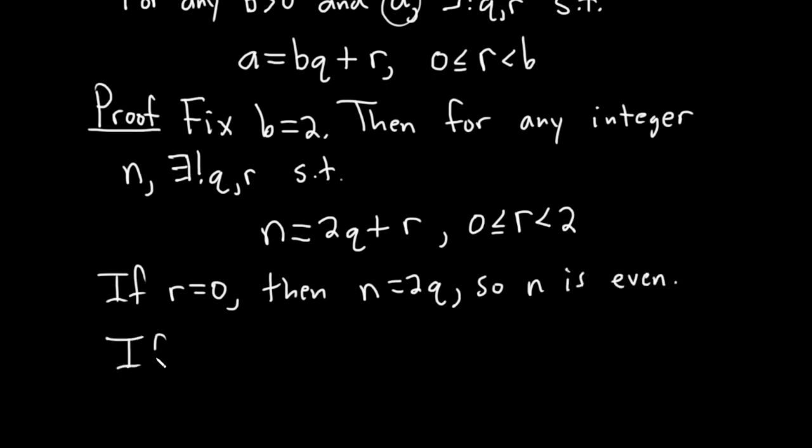If r equals 1, then n equals 2q plus 1. So n is odd.